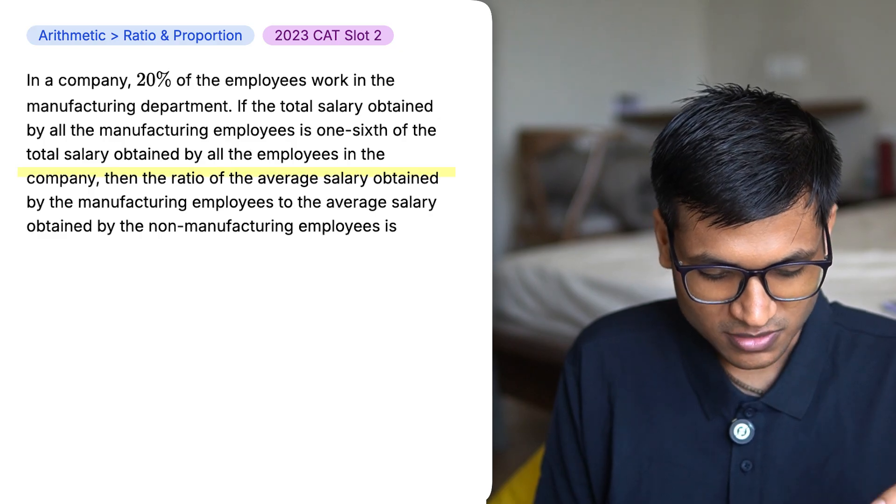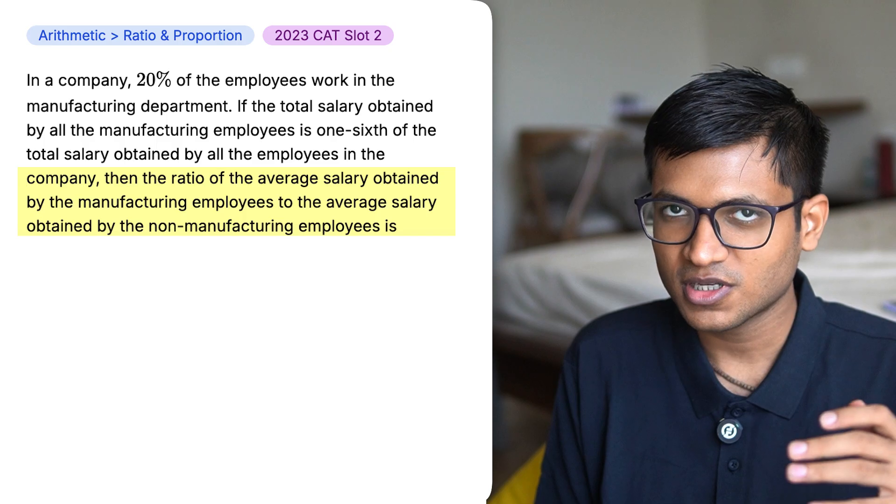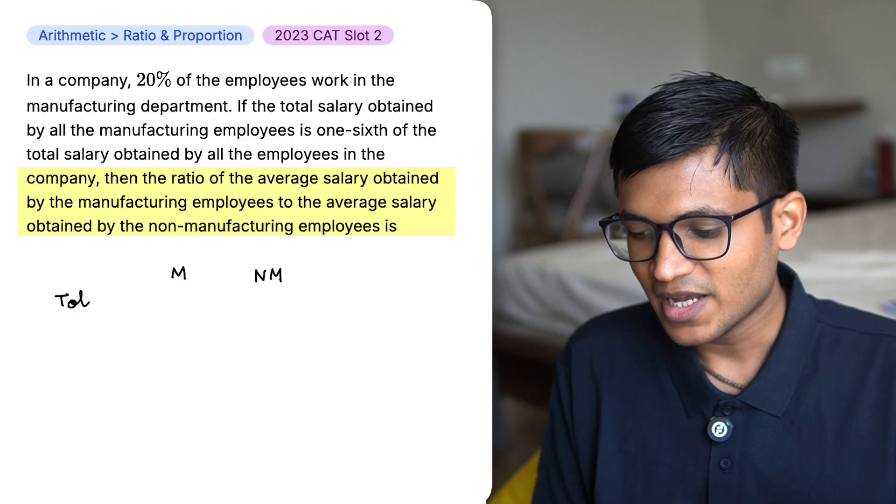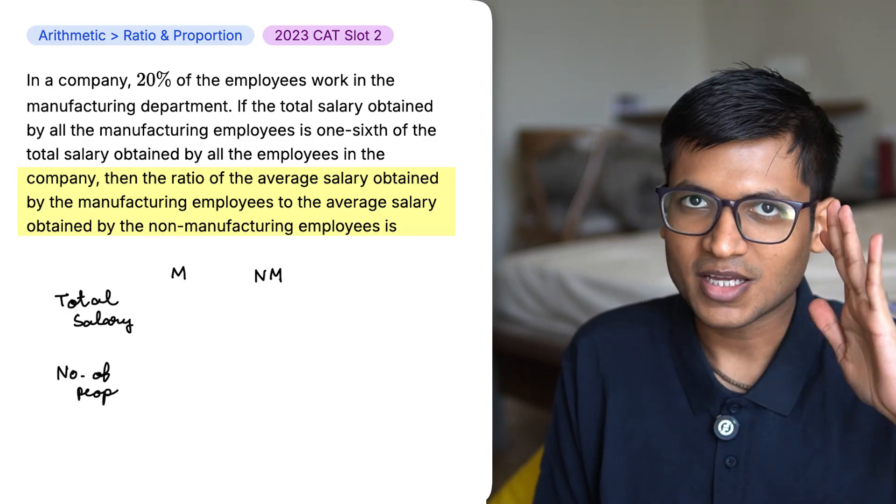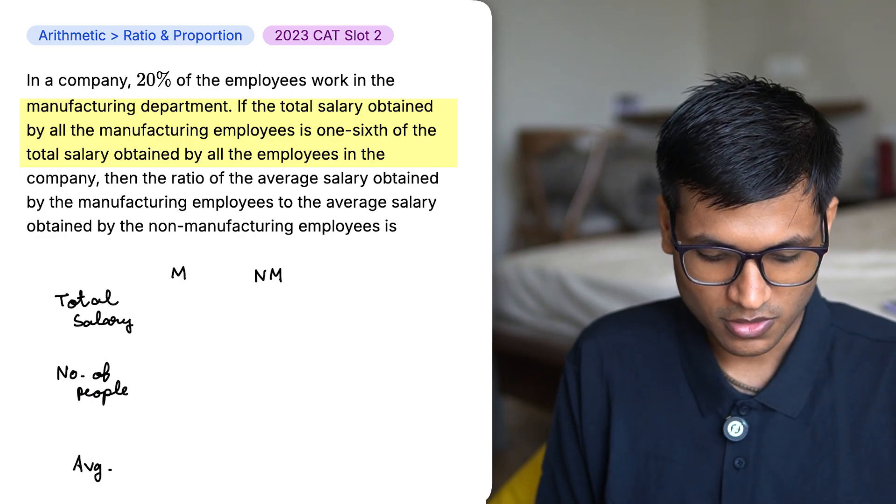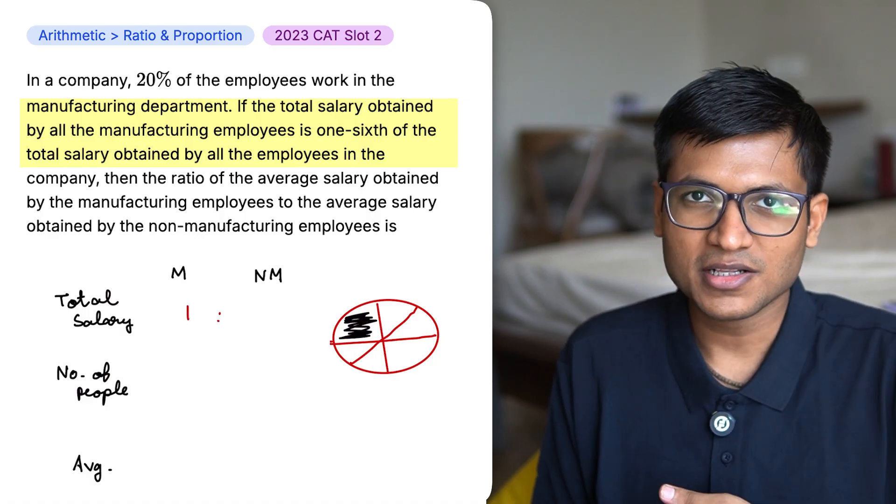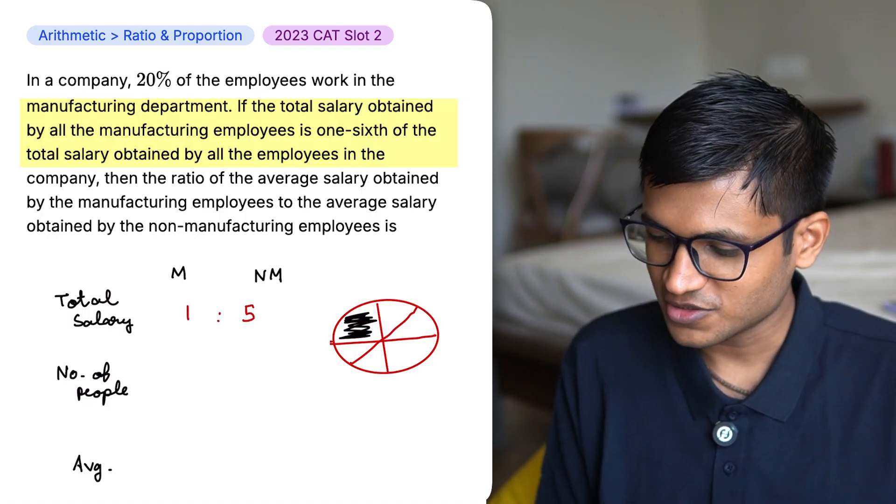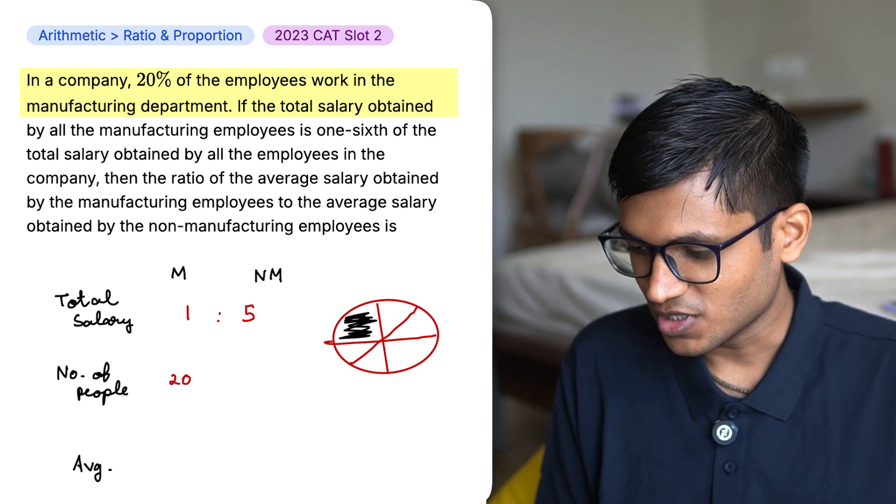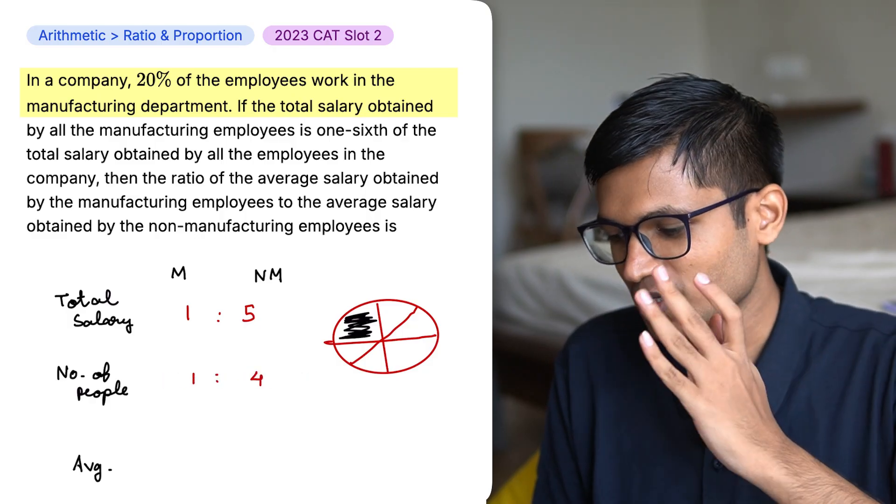Ratio of the average salary obtained by the manufacturing employees to the average salary obtained by the non-manufacturing employees. So I have M and NM. For the average salary, I need a total salary and the number of people. If I divide it, I get my average. If the total salary obtained by the manufacturing employees is one-sixth of the total salary. So imagine there are six parts. So one part goes to manufacturing employees and the remaining five parts goes to non-manufacturing employees. In a company, 20% of the employees work in the manufacturing department. So 20% work here and 80% work in the non-manufacturing. And that is nothing but 1 is to 4.